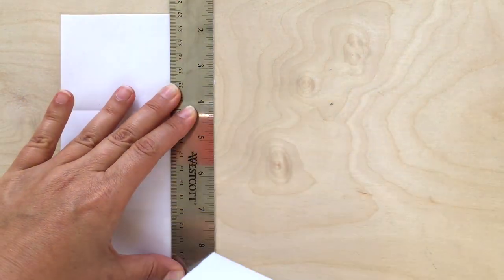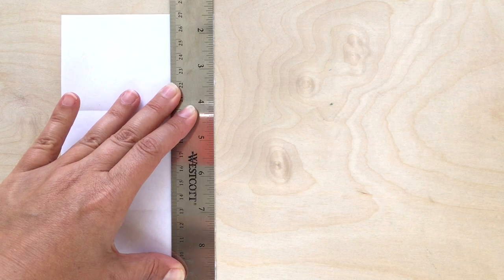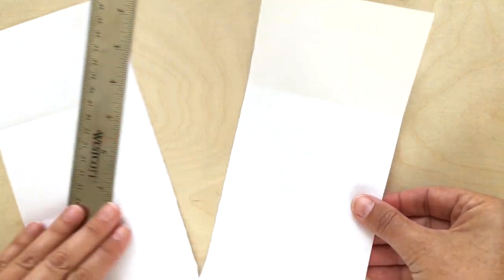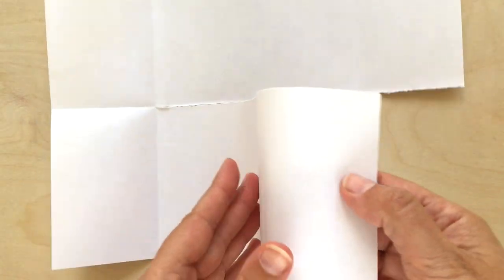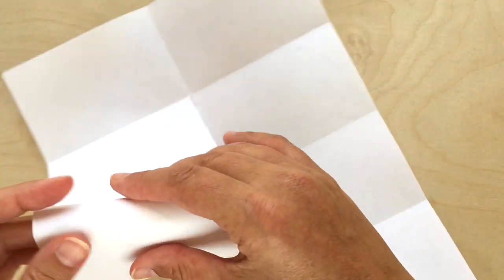So the key here is to stop tearing when you get to that last crease. Otherwise you'll just tear your paper in two. So here as you can see I stopped tearing when I got to that last crease.